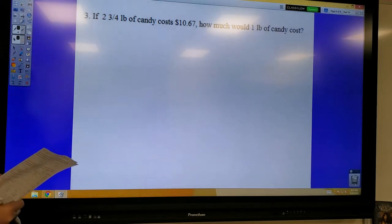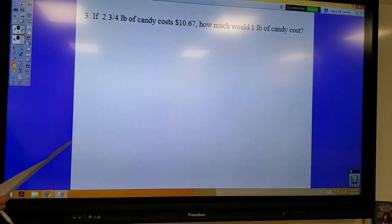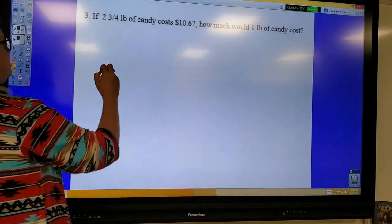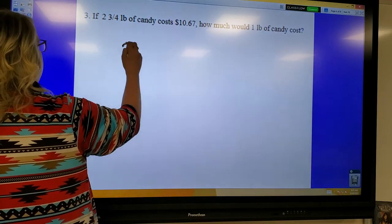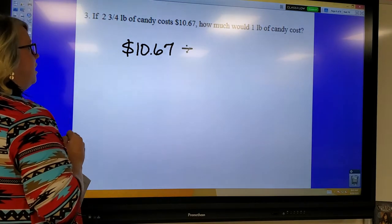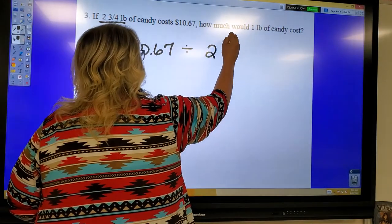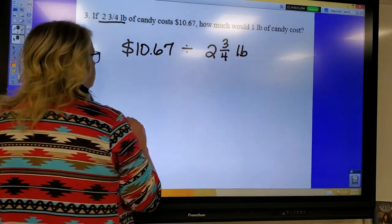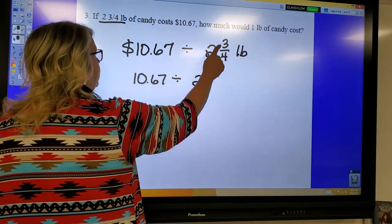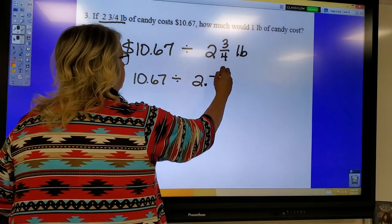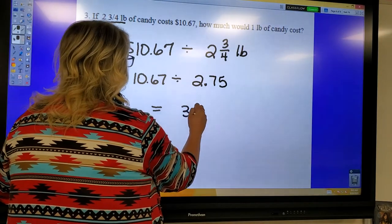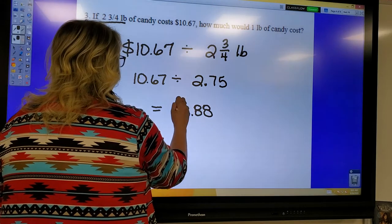It says, if 2 and 3 quarters pounds of candy cost $10.67, how much would 1 pound of candy cost? So how we said to work this problem out was to take the total price of the candy and divide that price by however many pounds you have. 2 and 3 quarter pounds. Well, we can use a calculator. So 10.67 divided by 2.75 - 3 fourths is 0.75. So when you divide these two decimal numbers, you get 3.88. So $3.88.